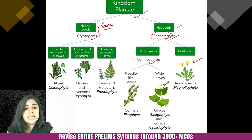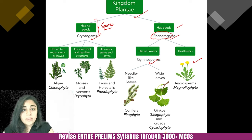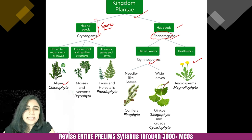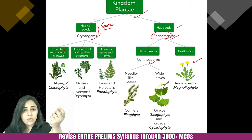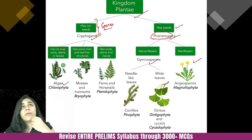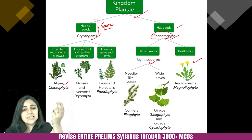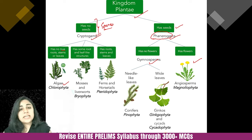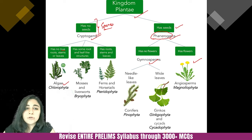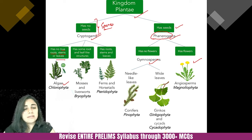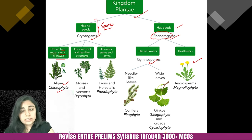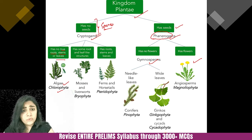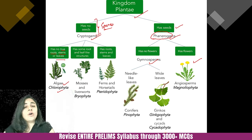Cryptogams represent the initial evolution of plants. The first variety is algae — these are unicellular organisms. Algae is photosynthetic, but they do not have a differentiated cell body; they do not have any true root, stem, or leaves. They are of the variety chlorophyta — they have chlorophyll and create their own food, but overall they do not have seeds.